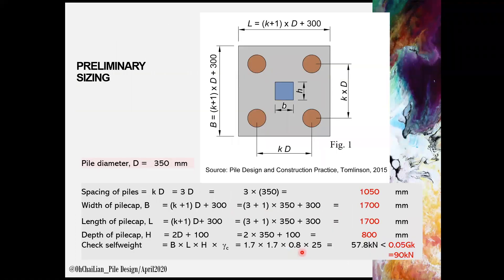Once we know the numbers of piles, we can base on the guideline provided by Tomlinson in sizing the pile cap as shown in Figure 1. Here, K is recommended between 2 to 3 depending on the soil condition. I use 3 in this case.